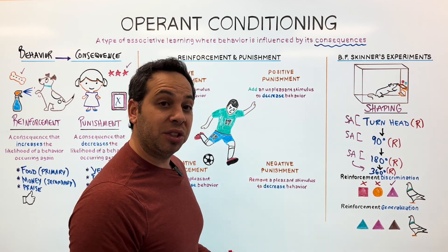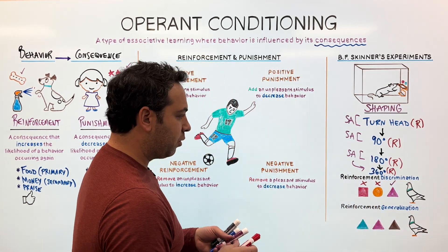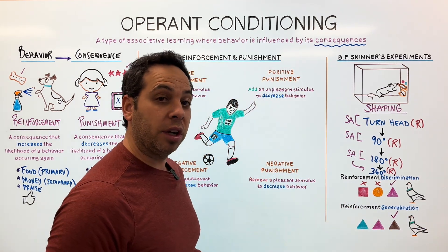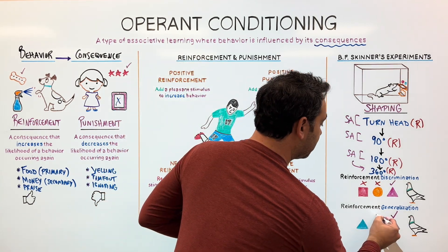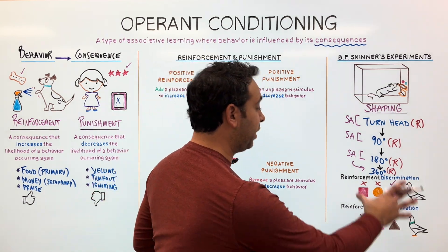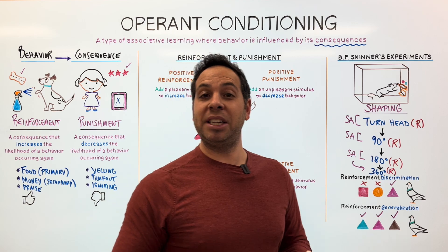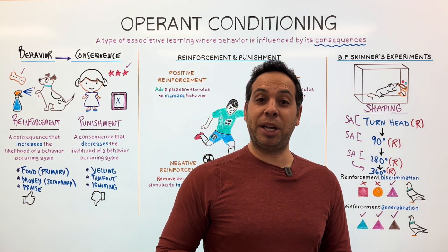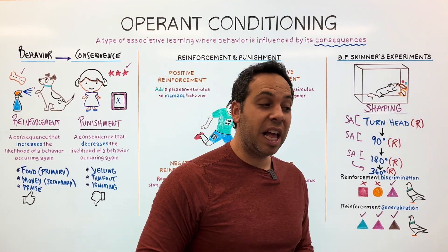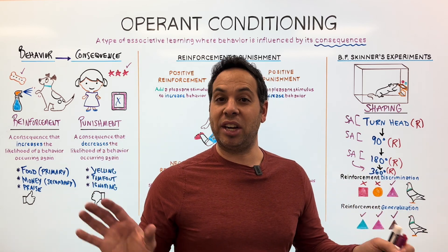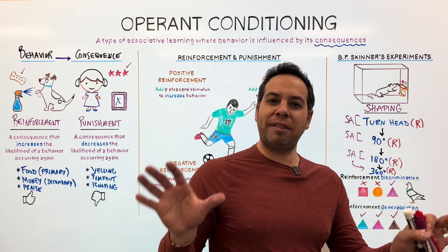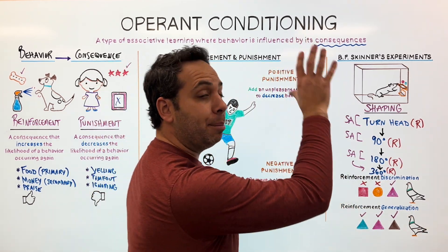We can also experience generalization, in which we respond to similar stimuli. Maybe this pigeon is trained to peck at a brown triangle and only gets reward at a brown triangle, but it starts to peck at other triangles — a pink triangle, a blue triangle. It can't discriminate between triangles; it thinks everything is going to lead to reward. Thinking about my son — he got allowance for cleaning his bedroom, and he finally realized his bedroom is like the kitchen, the kitchen is like the living room. He can clean all the rooms in the house and maybe get an allowance. He's generalizing that all of these things can lead to a positive outcome. So a lot of operant conditioning is based on the theories and studies of B.F. Skinner.